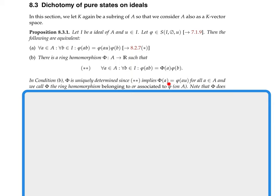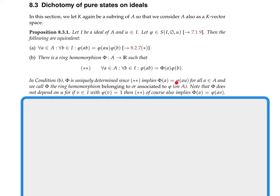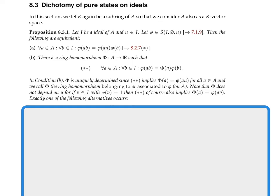Note that Φ does not depend on the choice of u. If you have a different v in I with φ(v) = 1, you could exchange u by v, since double star also implies φ(a) = Φ(a)·φ(v). So if Φ exists it doesn't matter whether you take u or another v with the same property.